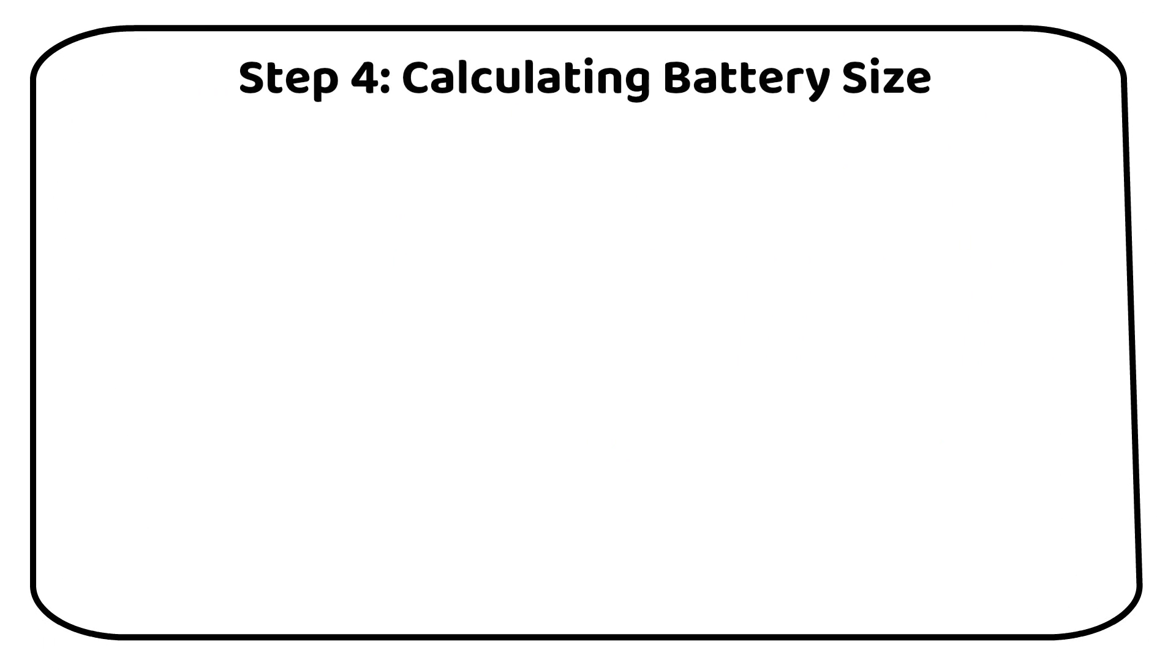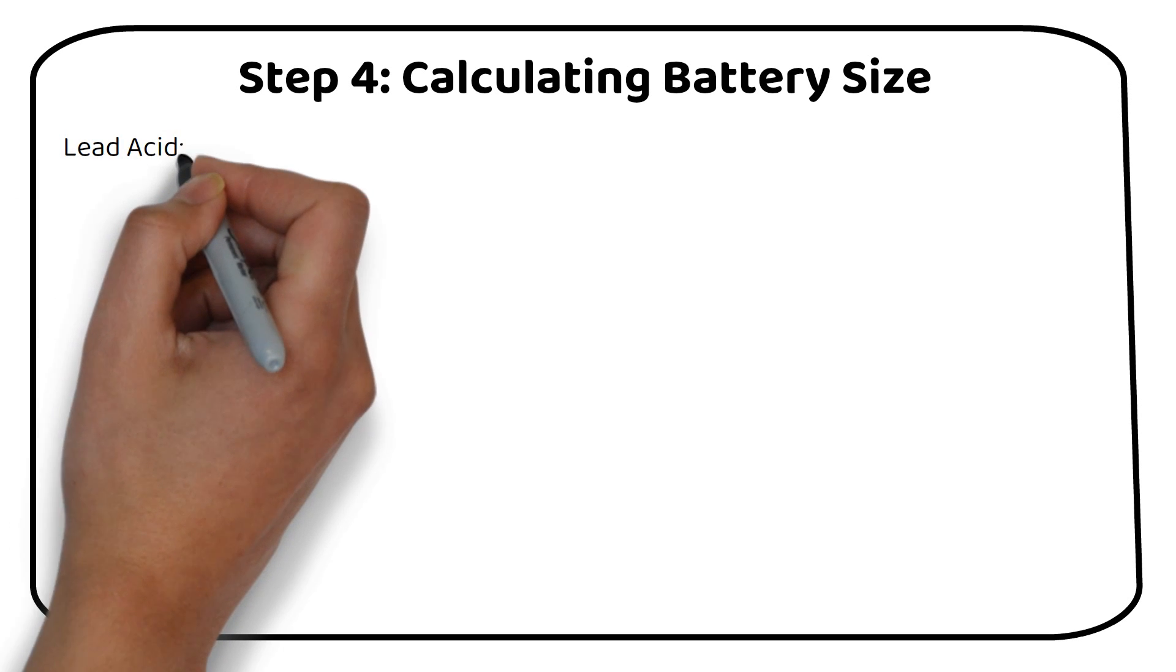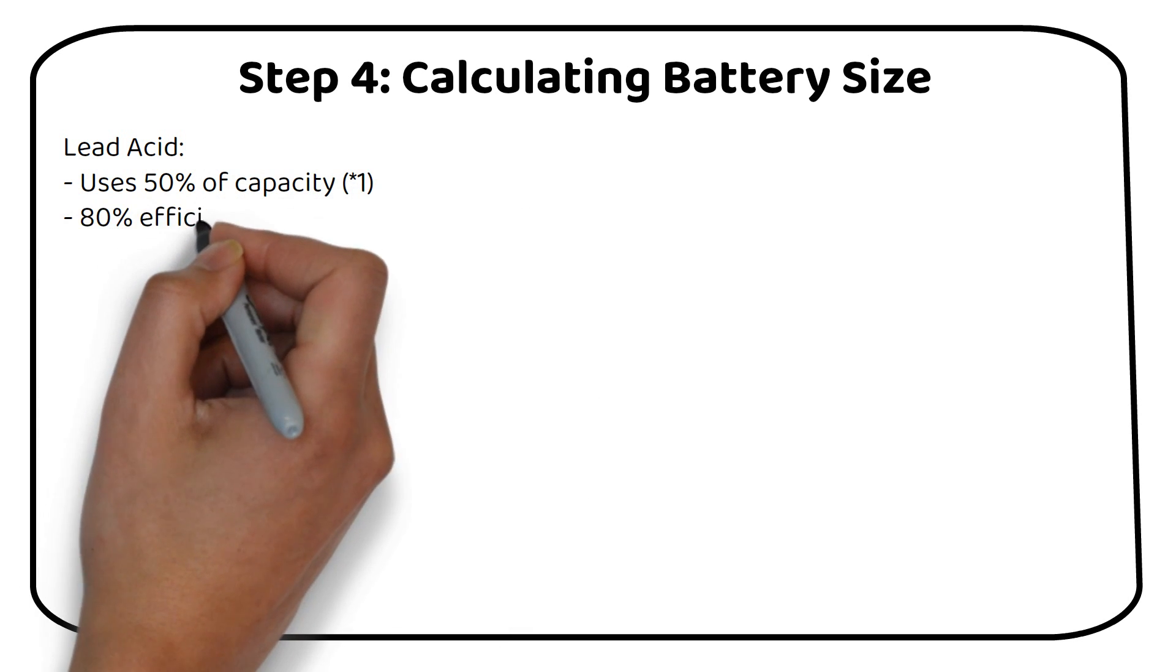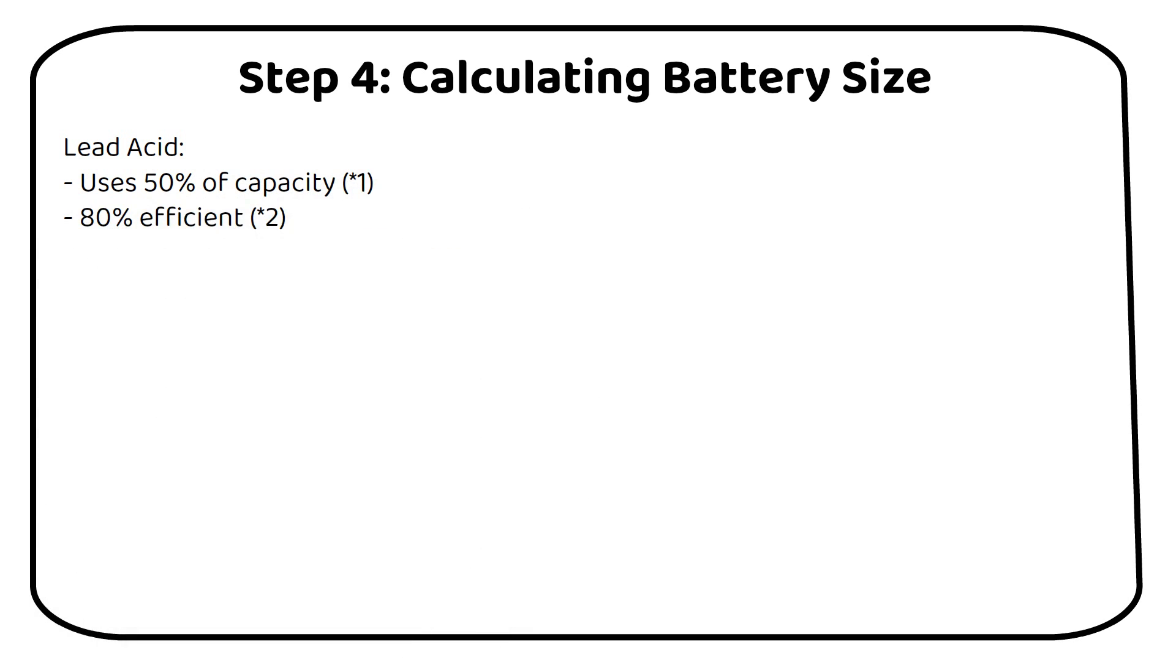Step 4. Calculating battery size. Now, let's dive into some calculations for both lead acid and lithium batteries. There are two key factors to consider in this calculation. For lead acid batteries, remember that you can only use about 50% of their capacity. And they have an energy conversion efficiency of around 80%. This means that for every 100Wh you put into the battery, you would get about 80Wh of usable power.